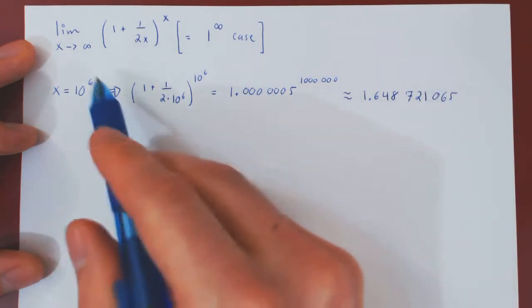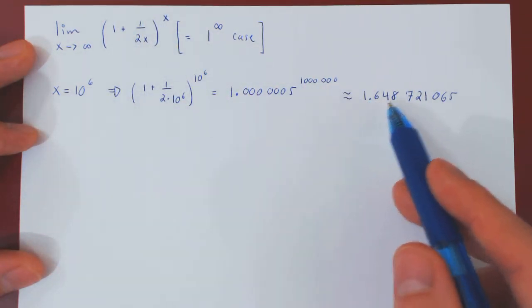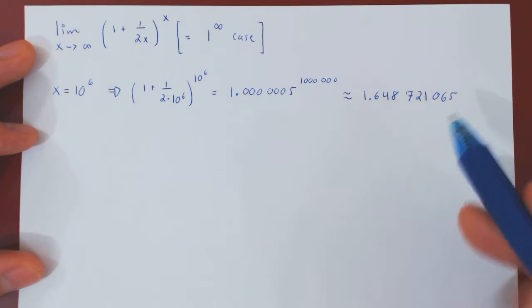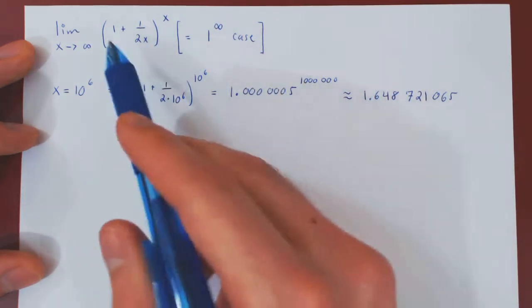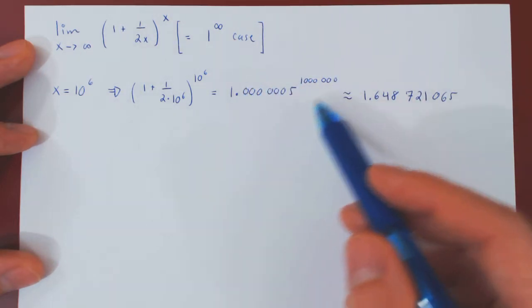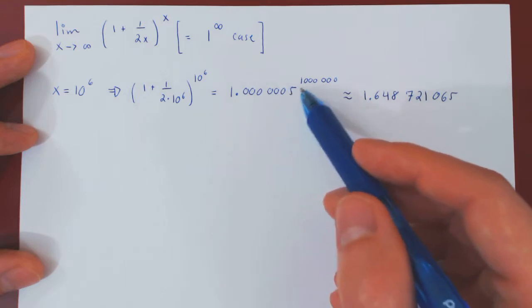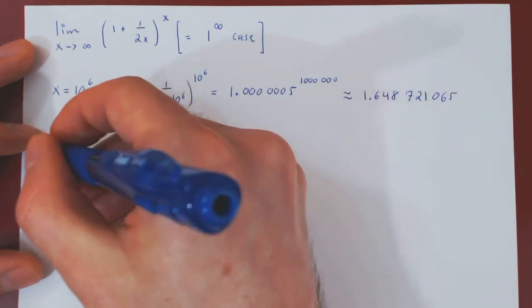So you see, when x is a million, the function is very close to about 1.65, which is not that close to 1. So right there, we see that perhaps the limit will not be equal to 1.